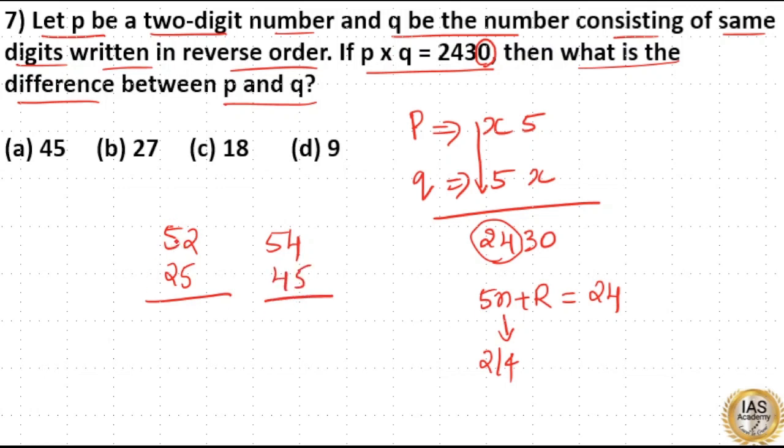Now if you look at this, 50×20 is 1000, so 52×25 is less than 2000. So this is not an option. Here, 54×45 is the correct answer because 50×40 is 2000.